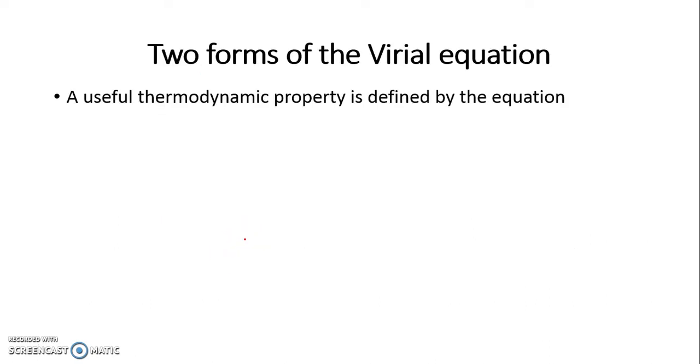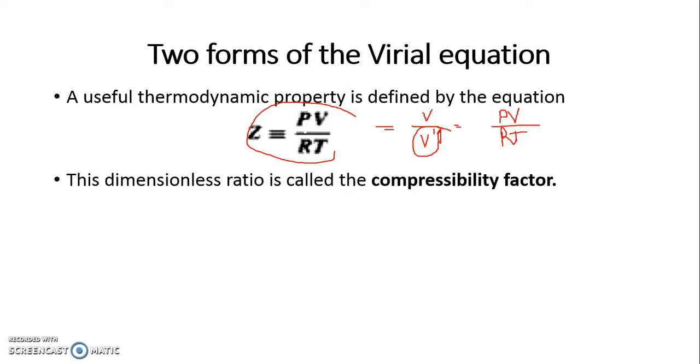There are two different forms of virial equation of state. To arrive at that, we first define a thermodynamic property. This is known as compressibility factor. Compressibility factor is the ratio of two volumes: actual volume to ideal case volume. Ideal case volume is given by RT/P. So Z equals PV/RT.